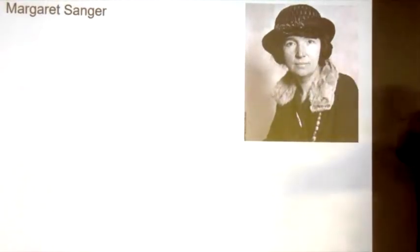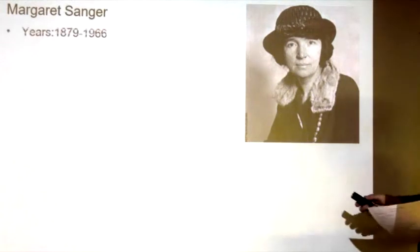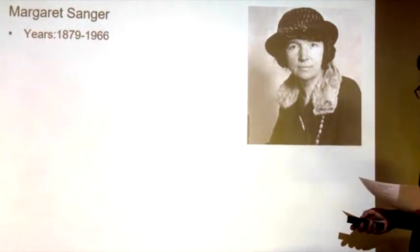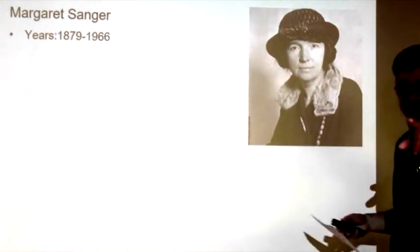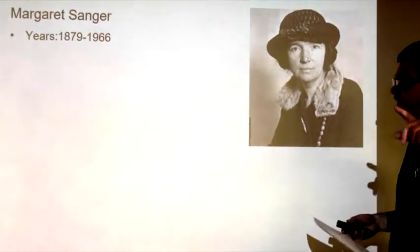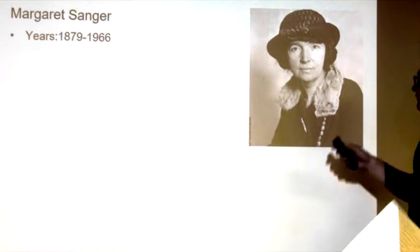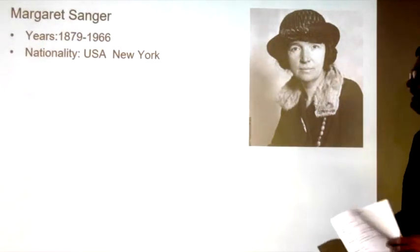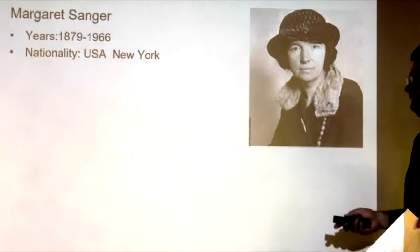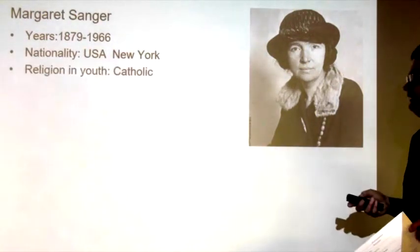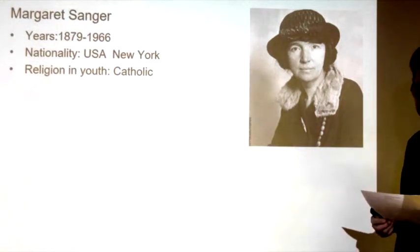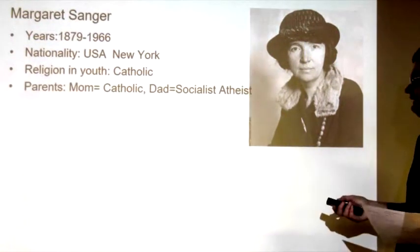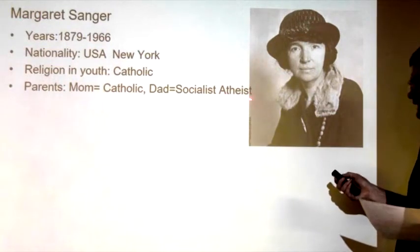There she is — see her eyes looking right at you. Her years: 1879 to 1966. What century did she live in? She lived in the 19th and 20th century. For nationality — U.S. of A., specifically New York. Her first religion was Catholic. Margaret Sanger — number three — what was her mom's religion? Catholic. What was her dad's religion? Socialist. Atheist.